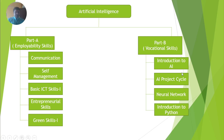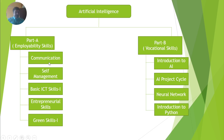Part B contains: Introduction to AI — AI means Artificial Intelligence — then AI Project Cycle, then Neural Network, and last one is Introduction to Python. I will continue from the first topic of Part A, Employability Skills, and the content is Communication. I will start from the first topic, which is Communication.